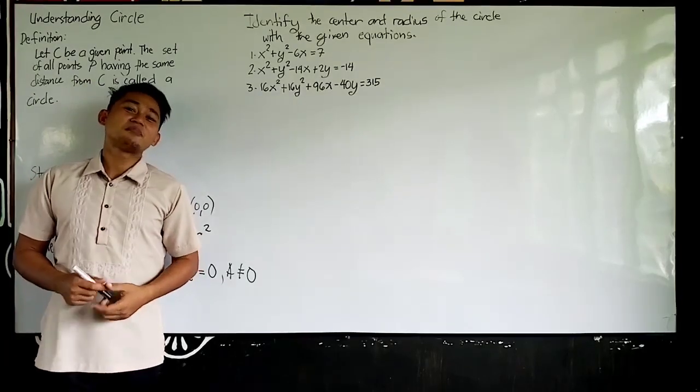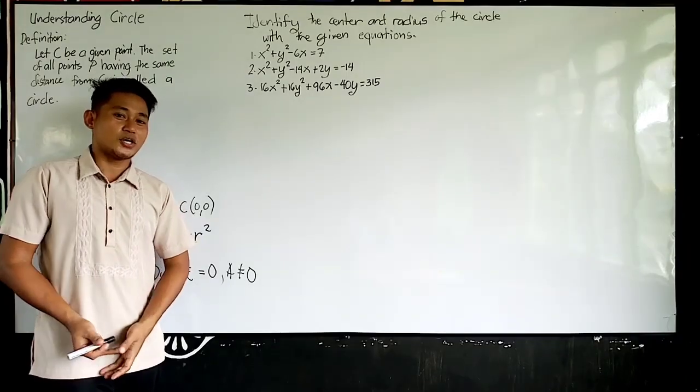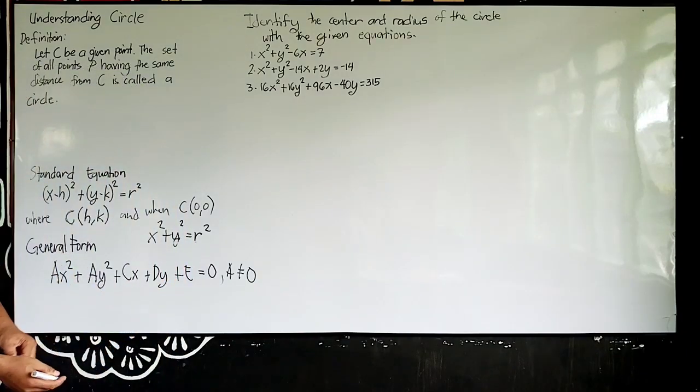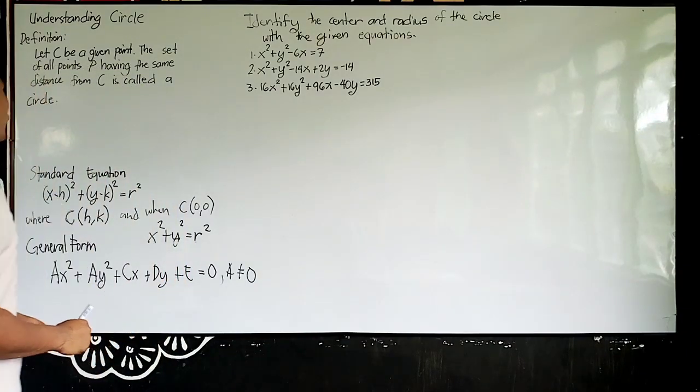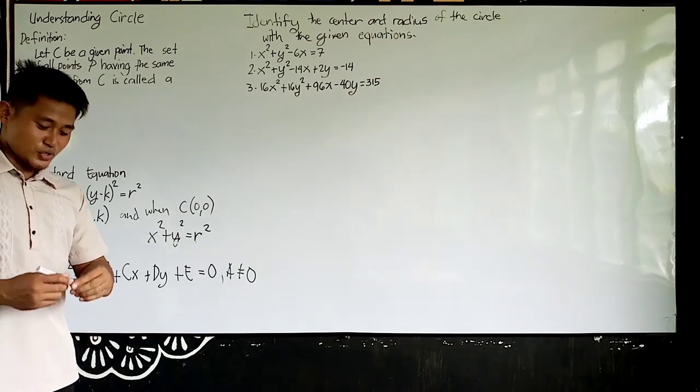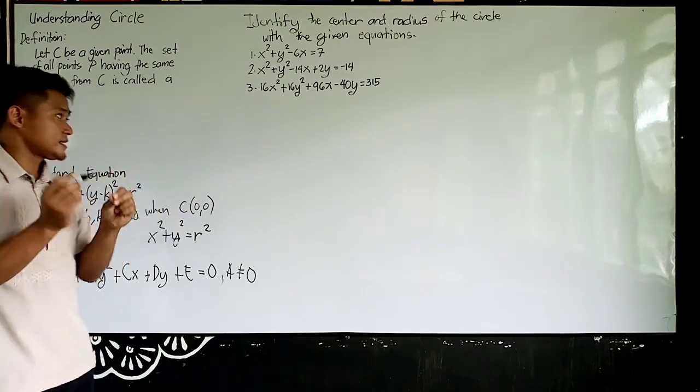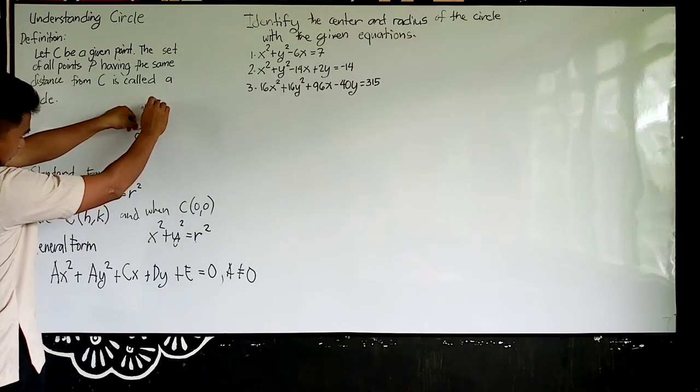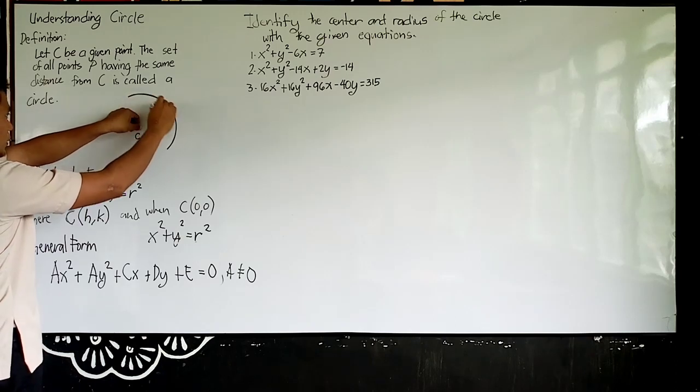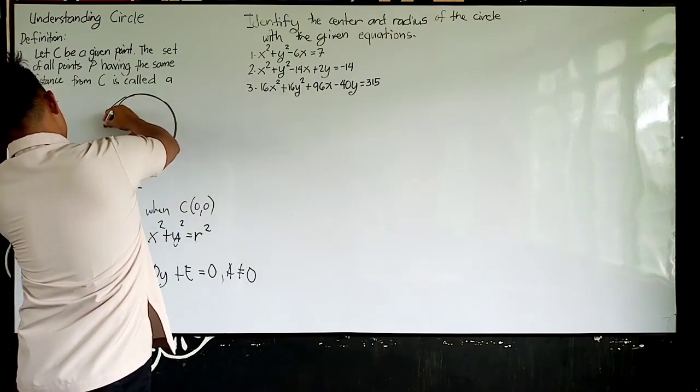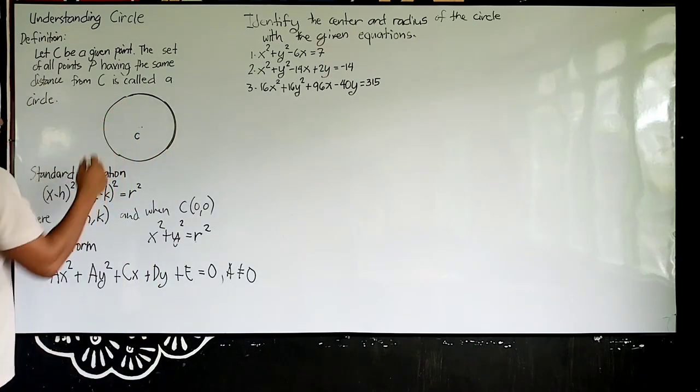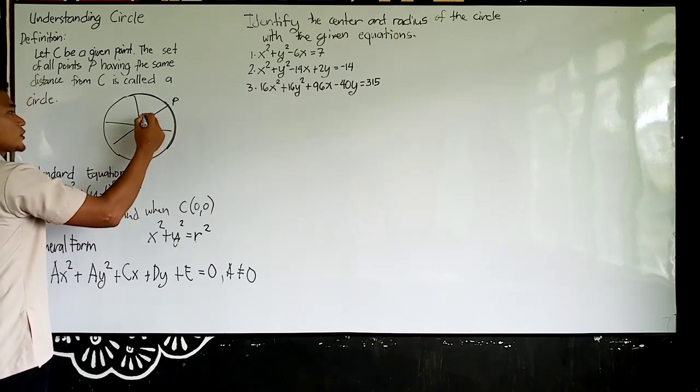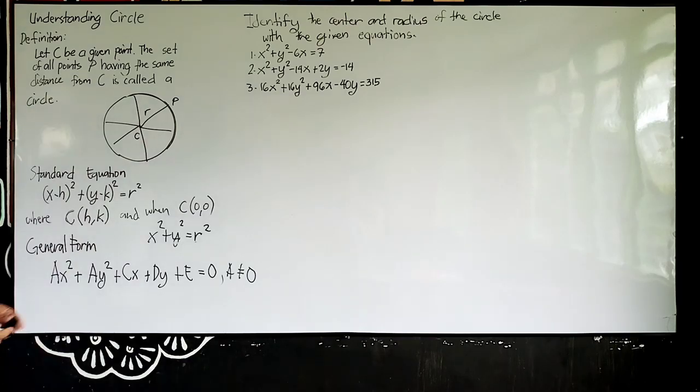Hello, McMone everyone. Today we'll be discussing or understanding about circle and we'll be identifying the center and radius of the circle with the given equation. By definition, let C be a given point. The set of points P having the same distance from C is called a circle. From a given point or your center to any point, you can form a circle. From C to P or any distance or common distance, ang tawag nito is radius or denoted as R.